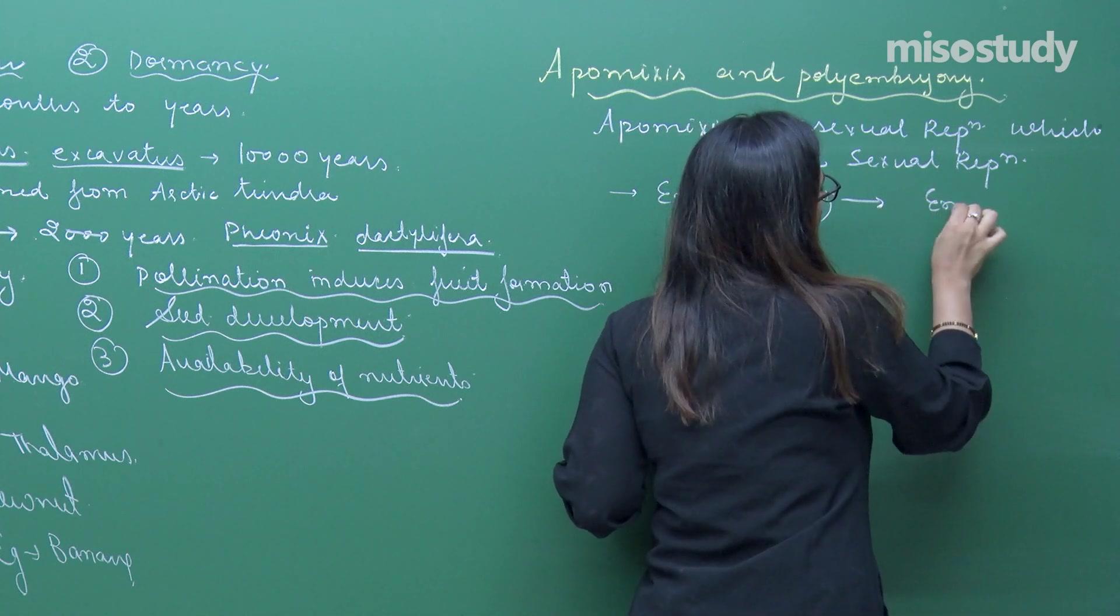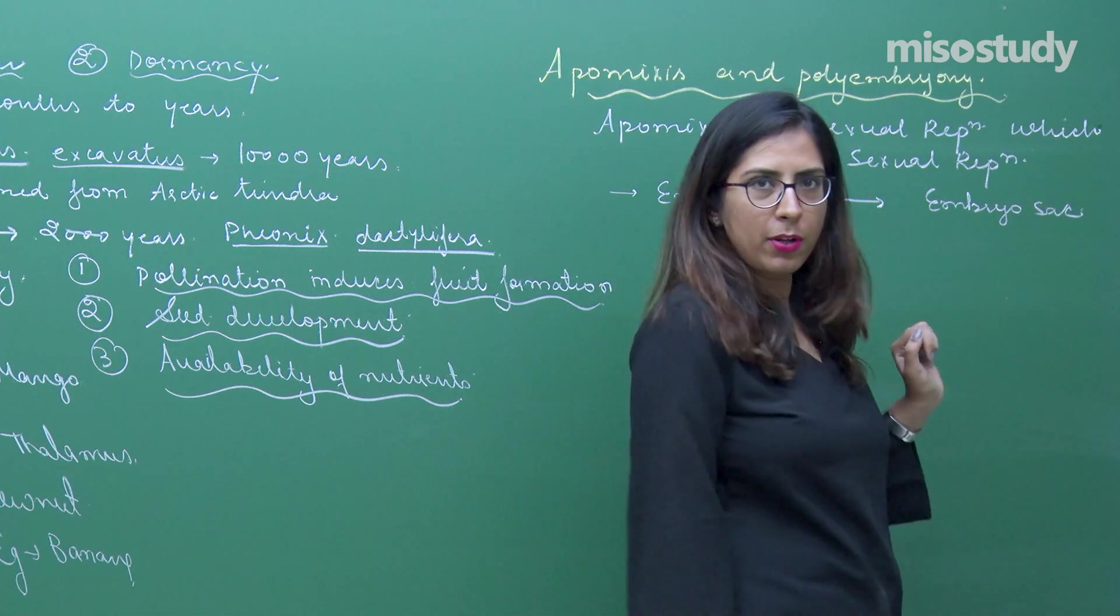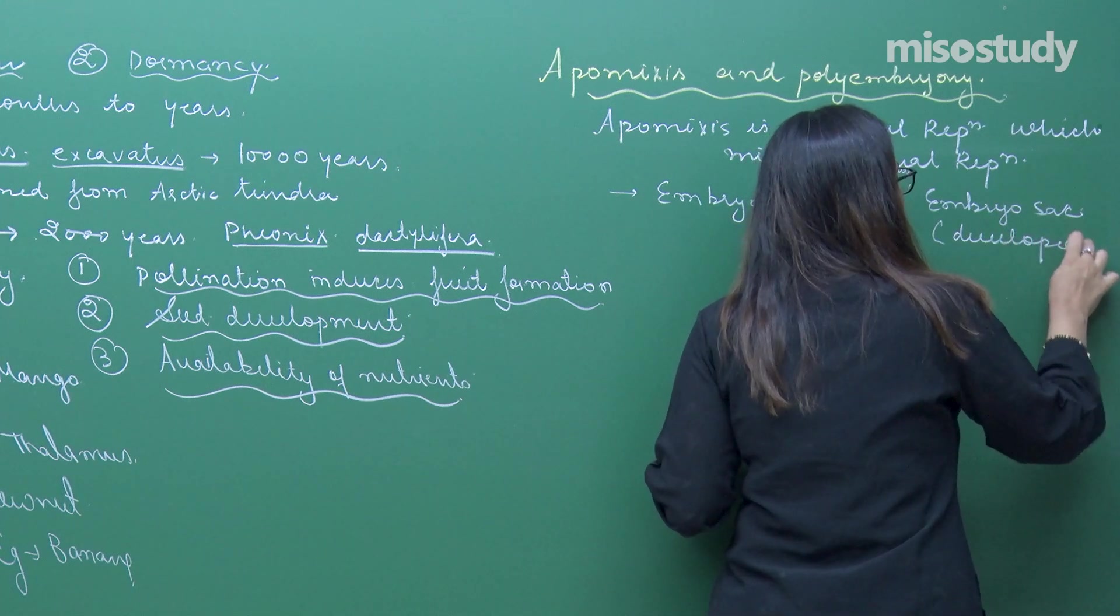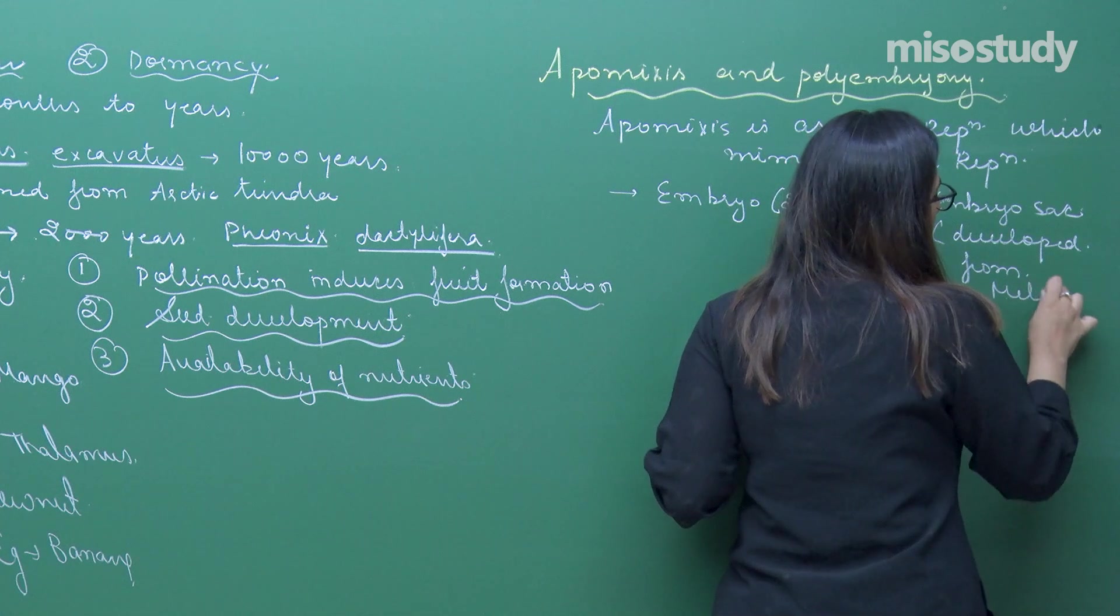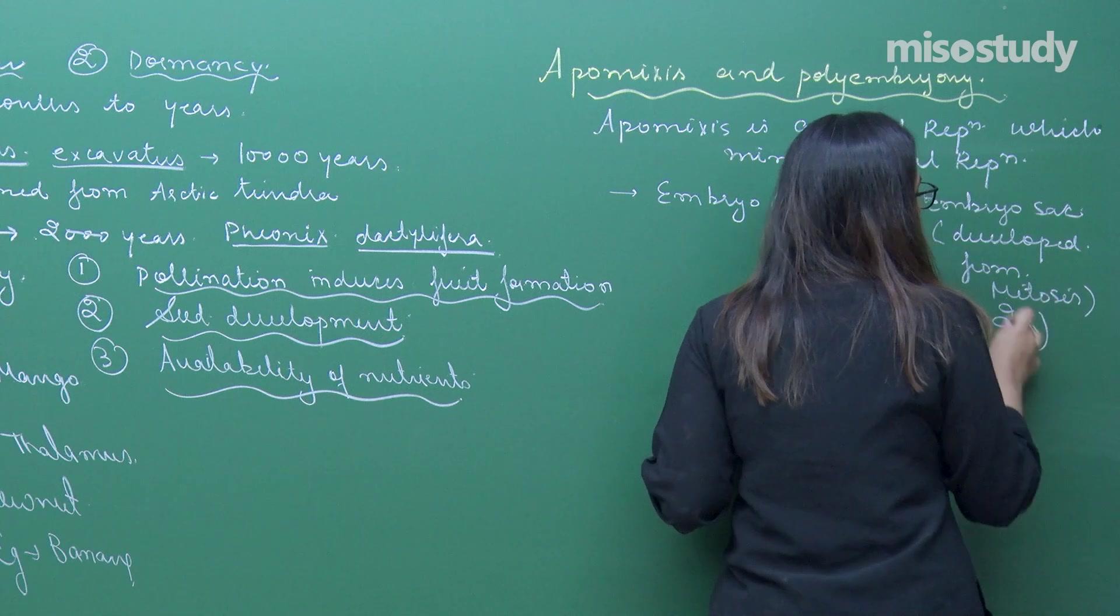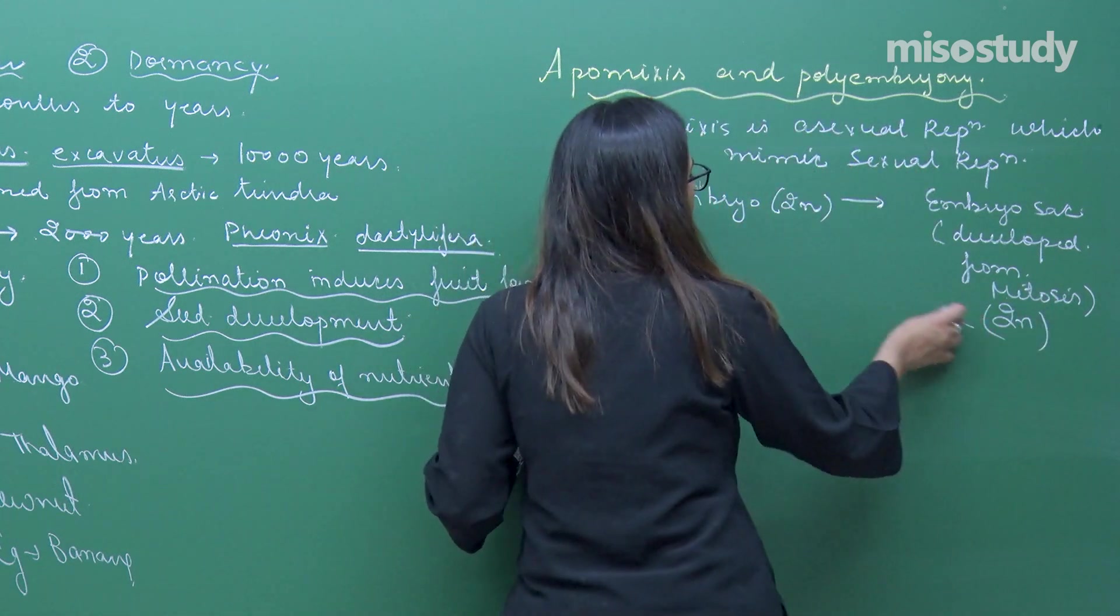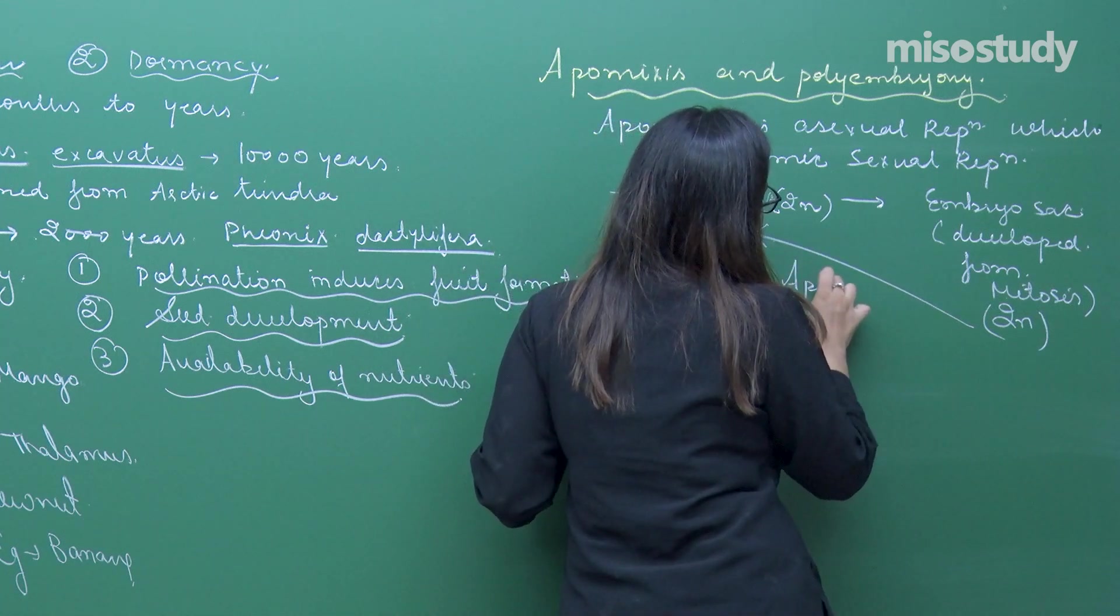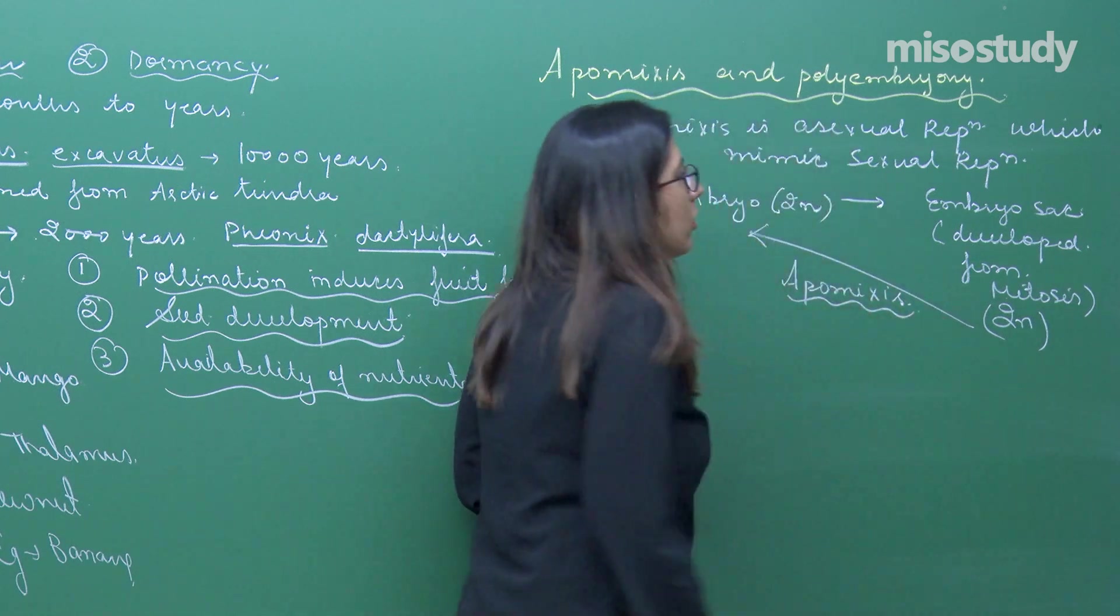For example, I have an embryo sac and this embryo sac is developed by mitosis. If it is developed by mitosis, this clearly gives us an idea that they will also be 2n. From that 2n condition if there is formation of an embryo, then such type of condition will be termed as apomixis. Will they require the process of fusion? No they will not require.